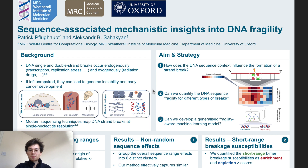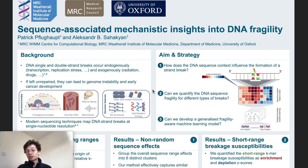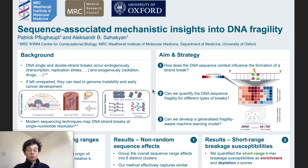Moving on to the right-hand side, there are three questions I want to address in today's poster. The first is how does the DNA sequence influence the formation of a DNA strand break? The second is can we quantify the DNA sequence fragility for different types of breaks? The DNA can break under many different conditions depending on where it is in the cell cycle, the cell line, the environment — so many different factors. If we're able to quantify this for many different conditions, we capture huge variation, which is really good input into a machine learning model. This leads us to the third question: can we develop a generalized fragility-aware machine learning model?